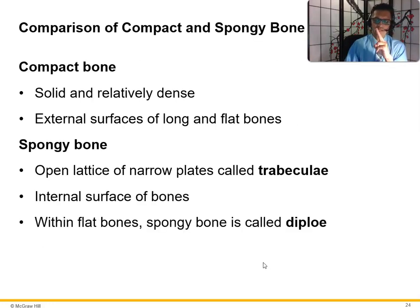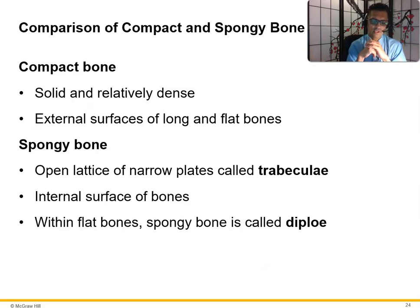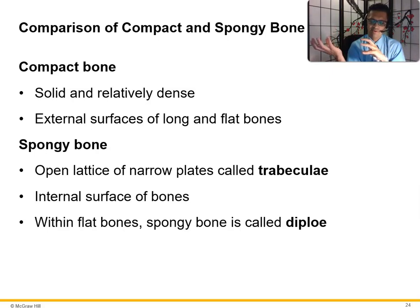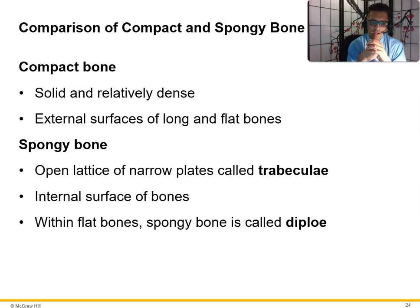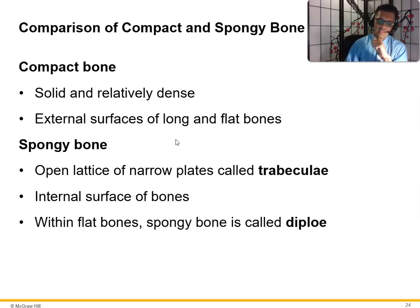Compact bone is solid and relatively dense, providing strength and stability. Spongy bone has an open lattice of narrow plates called trabeculae on the internal surfaces, providing flexibility. Bones are not a solid mass — if they were, movement would be very difficult. But they're not all spongy either, otherwise they'd be too fragile. It's a combination of compact and spongy bone that gives us strength, flexibility, and protection.